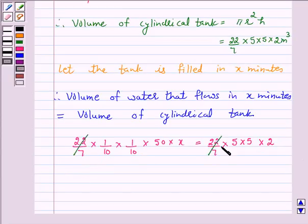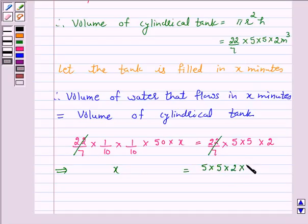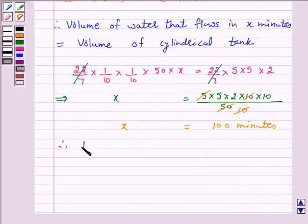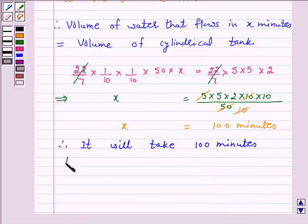Now we will solve this equation. We can cancel 22/7 on both sides, so this implies x is equal to (5 × 5 × 2 × 10 × 10) / 50. On cancellation we have x is equal to 100 minutes. Therefore it will take 100 minutes to fill the cylindrical tank.